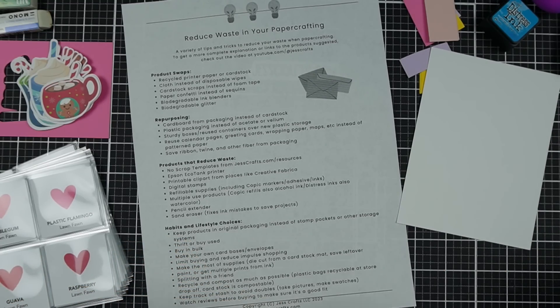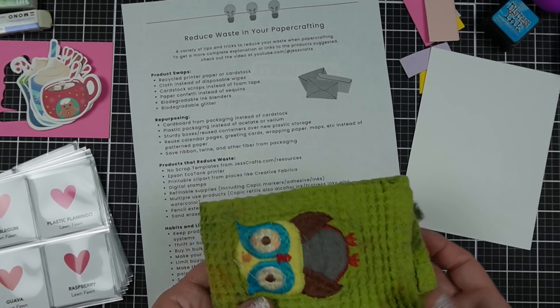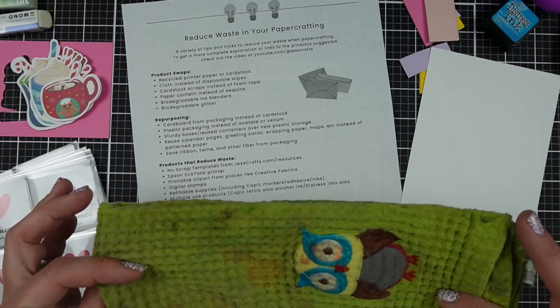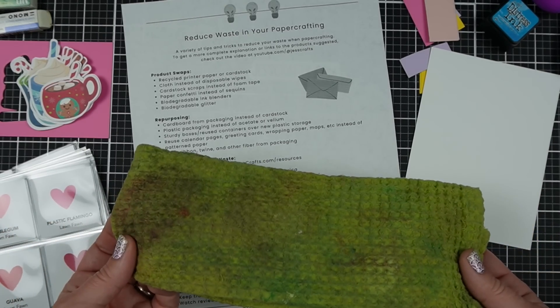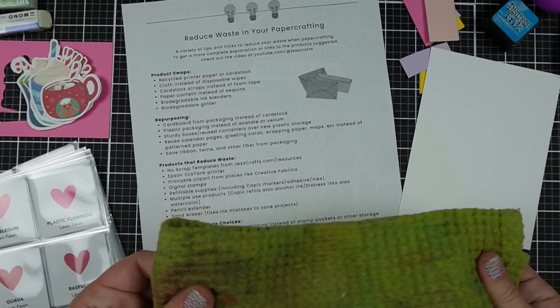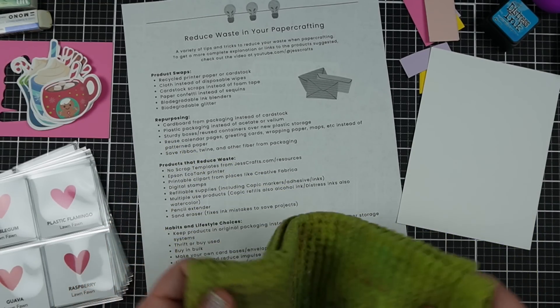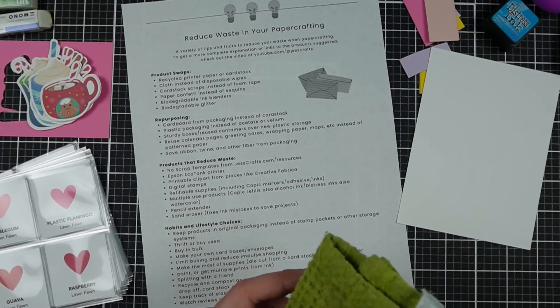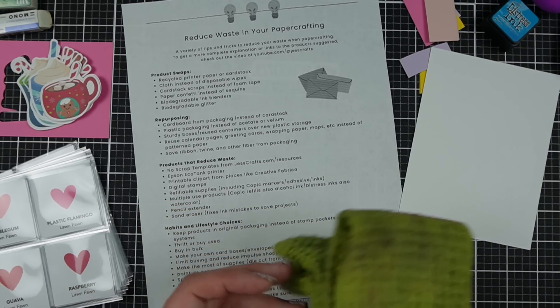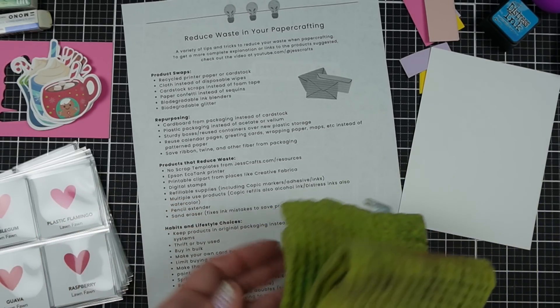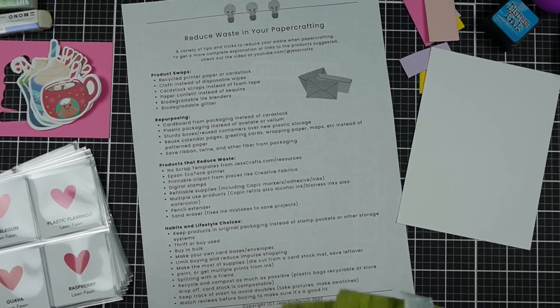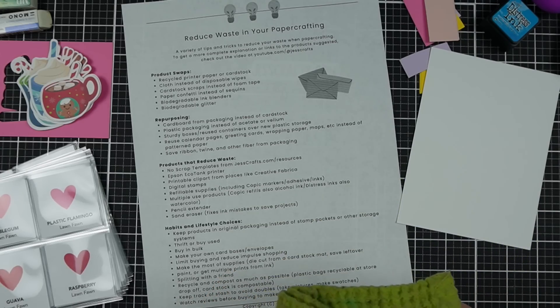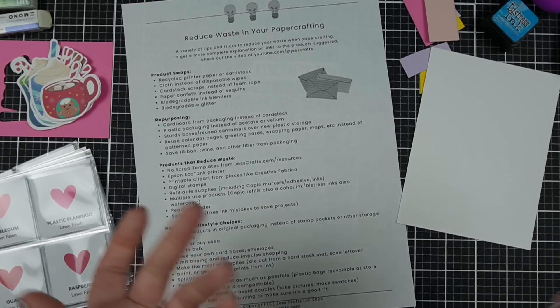Using cloth instead of disposable wipes. This is a really economical one because I have had this cloth from the dollar spot of Target for probably 10 plus years and it has like a waffle texture to it. So it kind of gets in there and cleans things up. I will say a lot of people recommend microfiber cloths. I'm not saying there's anything wrong with that, but do consider that they are made of plastic. And so when you wash microfiber cloths, you are spreading plastic.